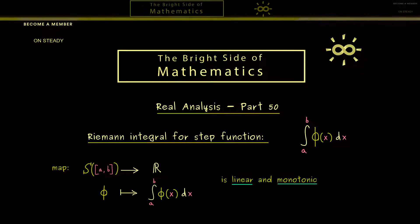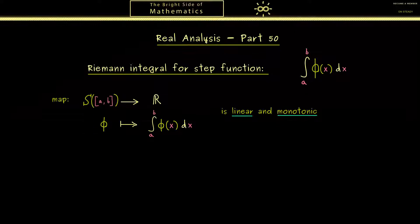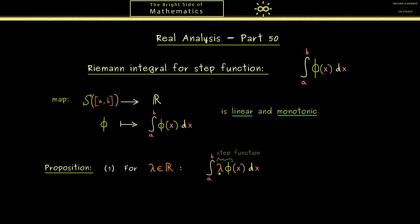Indeed to summarize these properties I can immediately tell you this map is a linear map and it's also monotonic. And what this exactly means I show you now. So let's put these properties into a proposition. Now the first thing is one part of the linearity and it holds for every real number lambda. Now with this lambda you are able to scale the step function phi.